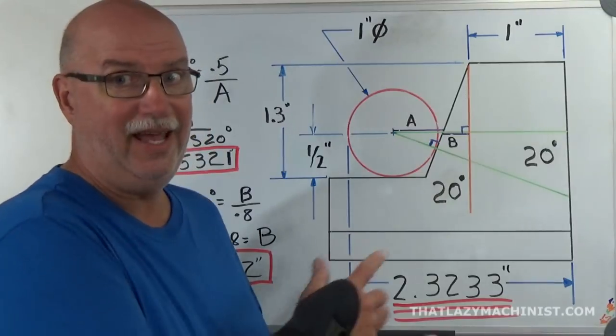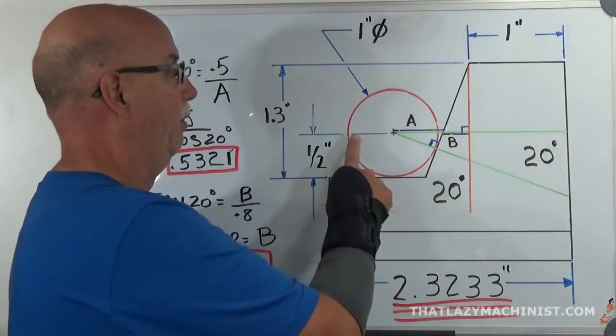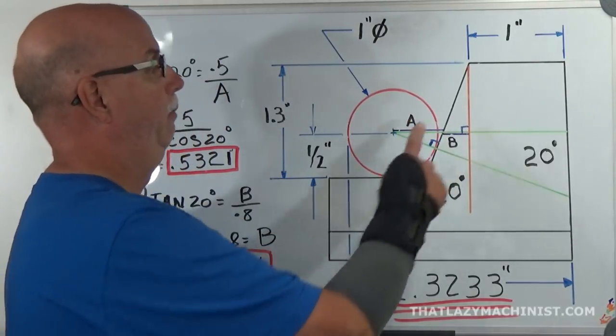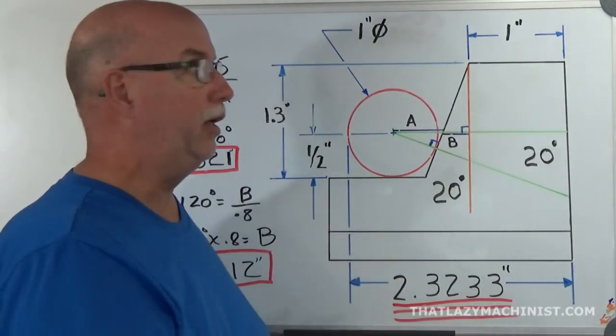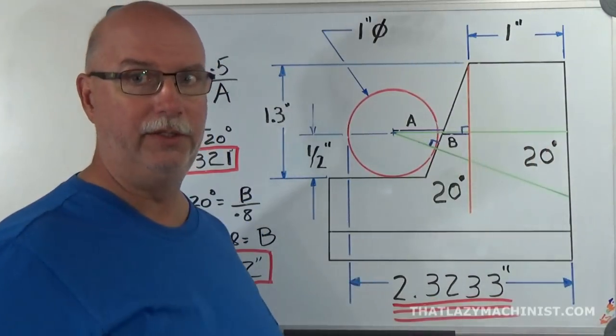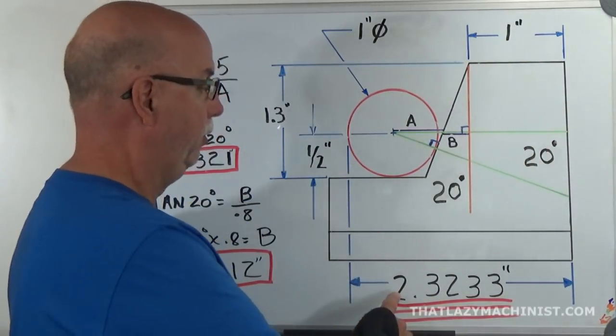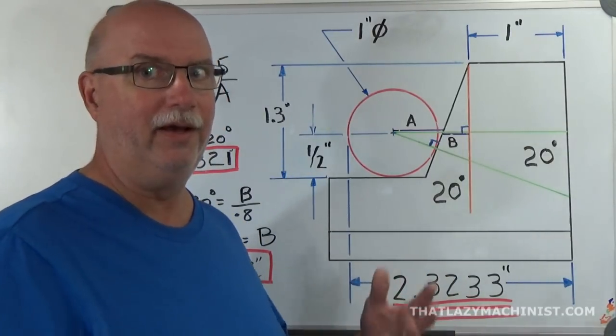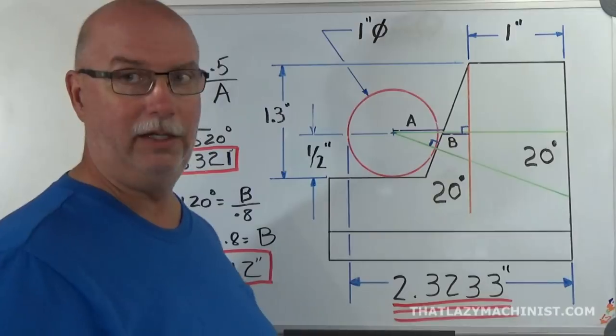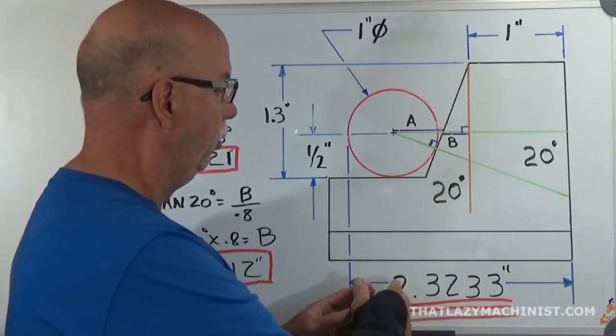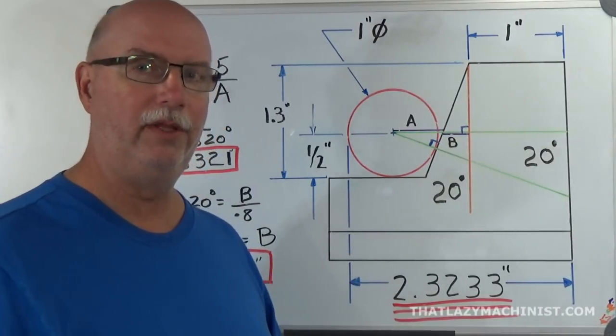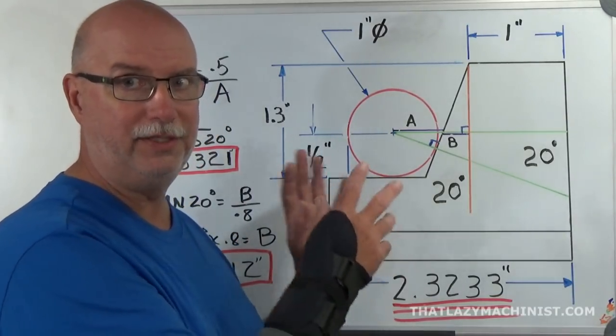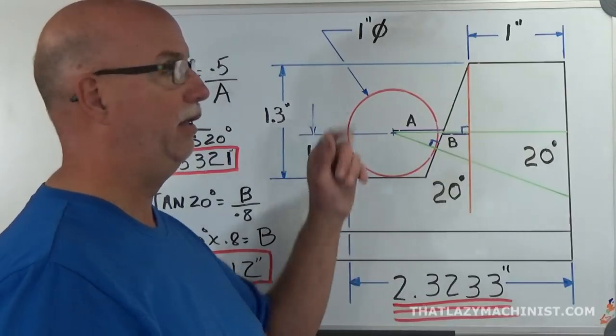So now all I have to do is add up all my segments. The first part of the cylinder here is 0.5 plus A plus B plus the back end here, which is 1 inch. And that will give me 2 inches 323 thousandths. As you can tell, I am too lazy to talk about the ten thousandths of an inch. So 2 inches 323 thou is the measurement you're shooting for if you want to measure this surface accurately with a pin of this diameter.